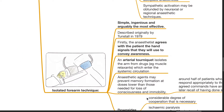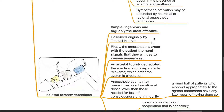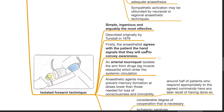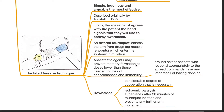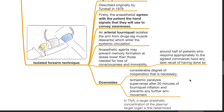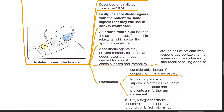The isolated forearm technique is simple, ingenious, and arguably the most effective. It was originally described by Tunstall in 1979. The anesthetist agrees with the patient on hand signs to convey awareness. An arterial tourniquet isolates the arm from drugs which enter the systemic circulation, such as muscle relaxants. Anesthetic agents may prevent memory formation at doses lower than those needed for loss of consciousness and immobility. Around half of patients who respond appropriately to the agreed commands have any later recall of having done so. Downsides include the considerable degree of cooperation necessary, and ischemic paralysis supervenes after 20 minutes of tourniquet inflation, preventing any further arm movement.